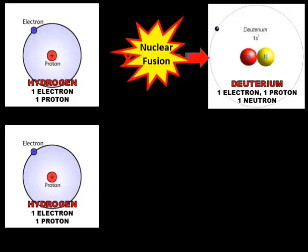Deuterium consists of one electron orbiting a nucleus of one proton and one neutron. Deuterium is also hydrogen but is called heavy hydrogen because of the extra particle in its nucleus. This is called an isotope.